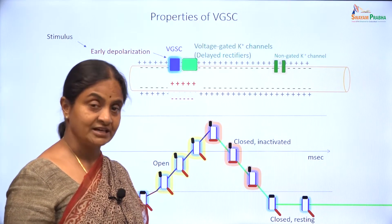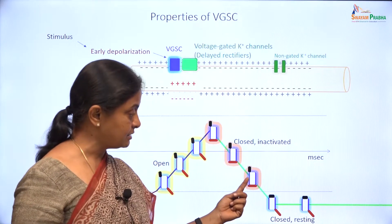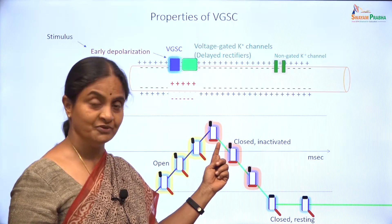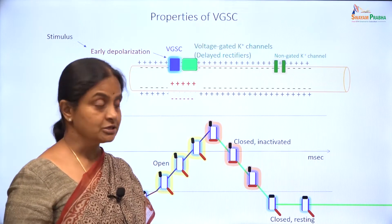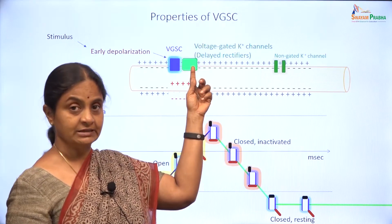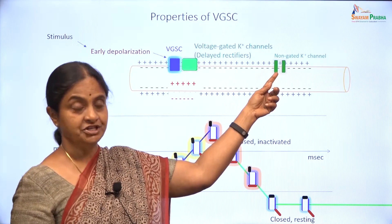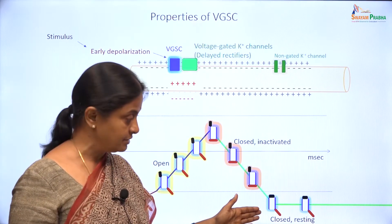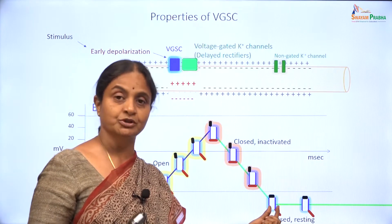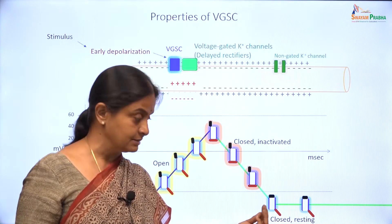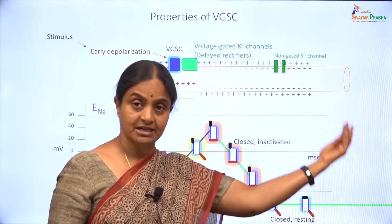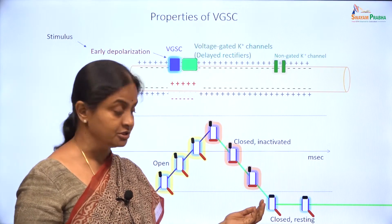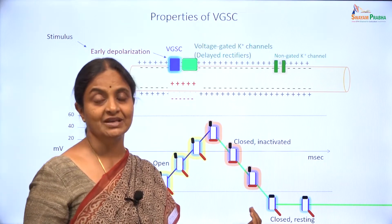This is the basis of the refractory period as well. During this period, even if you give another stimulus — no matter how strong that stimulus is — it is not possible for the sodium channel to conduct. This is also the reason why an additional class of potassium channels have to open up — not just the non-gated channels, but a lot more potassium channels need to open up to quickly repolarize the membrane, so that the sodium channel becomes responsive again and so that the nerve or the muscle can conduct a quick succession of action potentials. We have already seen how the delayed rectifiers are important for abbreviating the duration of the action potential.